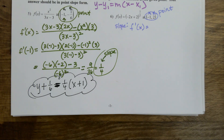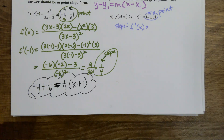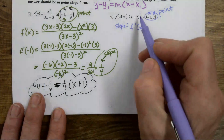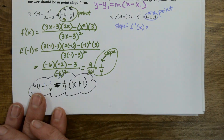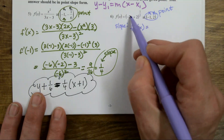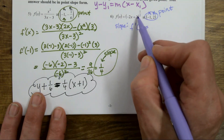I heard product, but I don't have two things really being multiplied together. I don't have a denominator, so it can't be quotient. So I'm stuck with chain rule here. Chain rule is the one where I have a function inside a function — it's a line inside a square root.